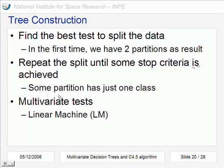We repeat this process to find more tests to split the data until some stop criteria is achieved. For example, some partition has just one class is a good time to stop. And an approach to make this construction is called linear machine.